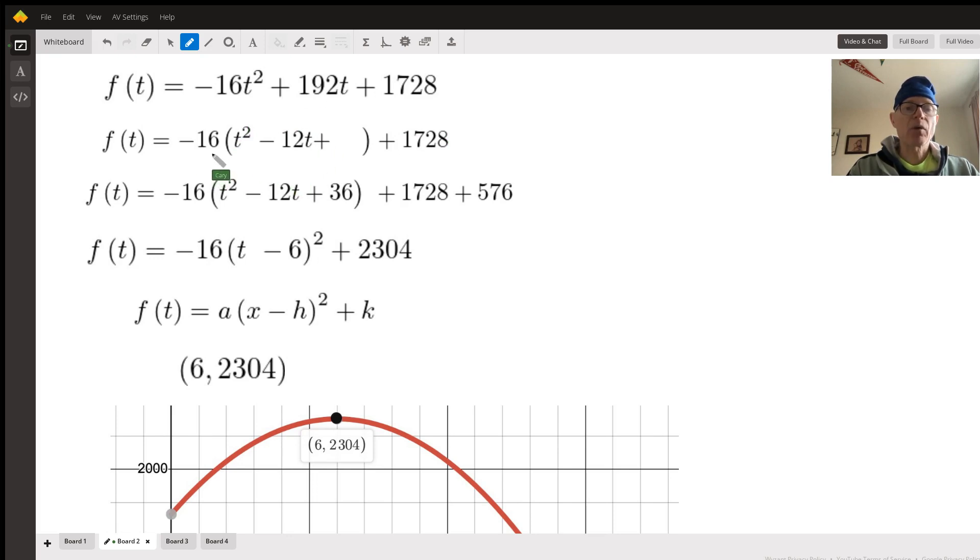So looking at it backwards, negative 16 times t squared gives you this term, and negative 16 times negative 12t gives you that term. So these are still equivalent, and we're leaving the constant term out here to the side.